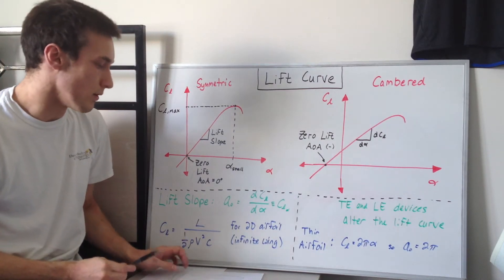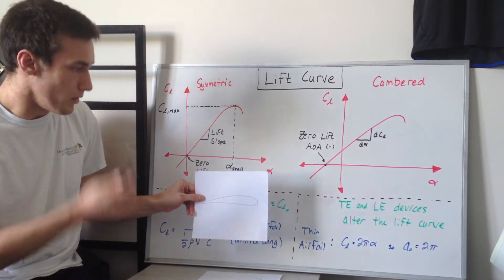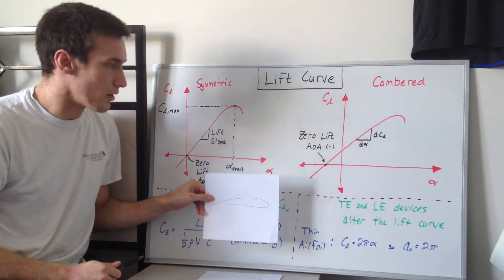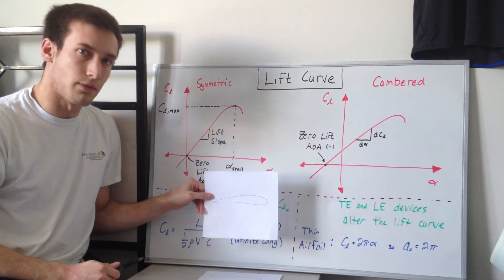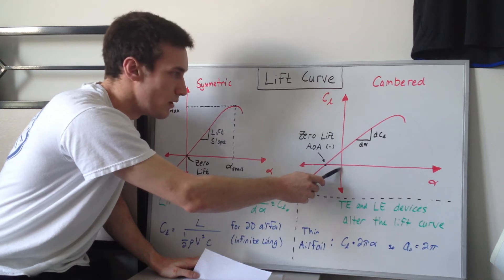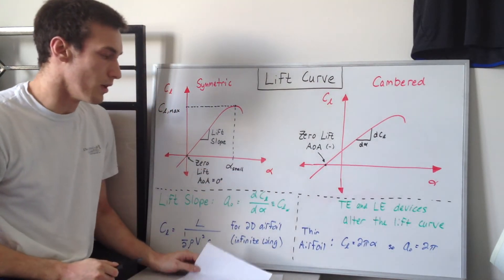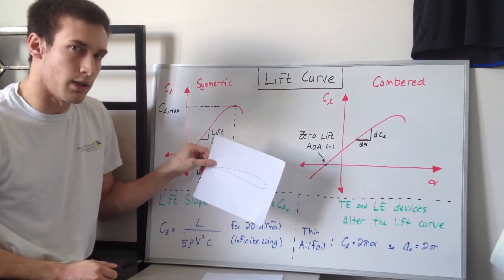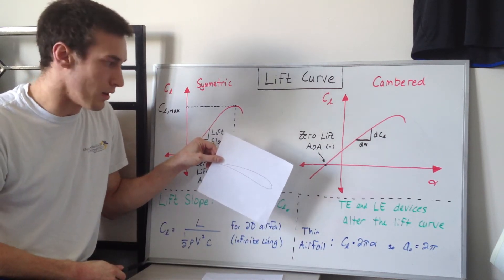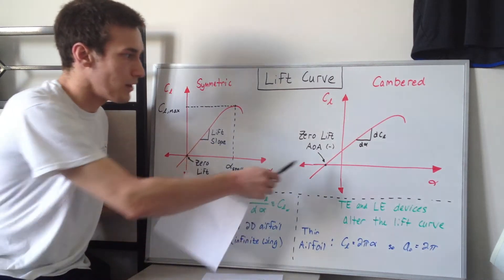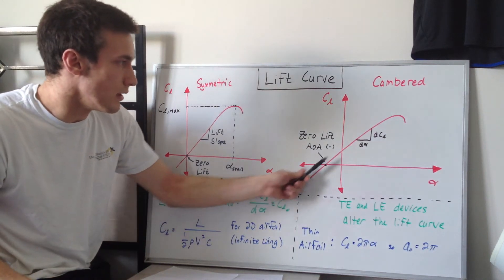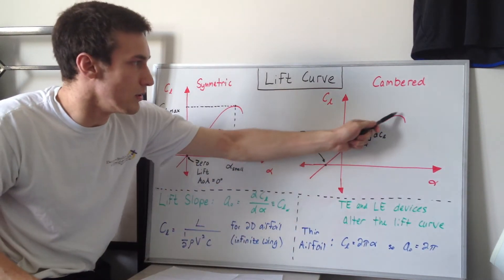Now what if you have a cambered airfoil? For a slightly cambered airfoil, if we start at zero angle of attack, there's actually a positive lift acting on it. So at zero angle of attack you actually have a positive lift coefficient. You have to decrease to a negative angle of attack to get zero lift. That's why the zero-lift angle of attack will actually be negative. Again, this cambered airfoil has a linear-ish slope until it gets into the stalled region.